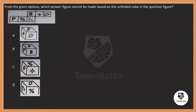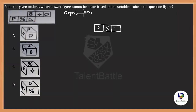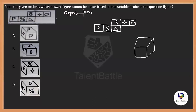Now let's look at a question about unfolded-to-folded cubes. We have an unfolded cube with six faces showing symbols: P, percentage sign, right-angle triangle, 8, a star-form figure, and a message symbol. One of the given folded cube options cannot be made from this unfolded cube. To answer, we need to understand the concept of opposite faces.